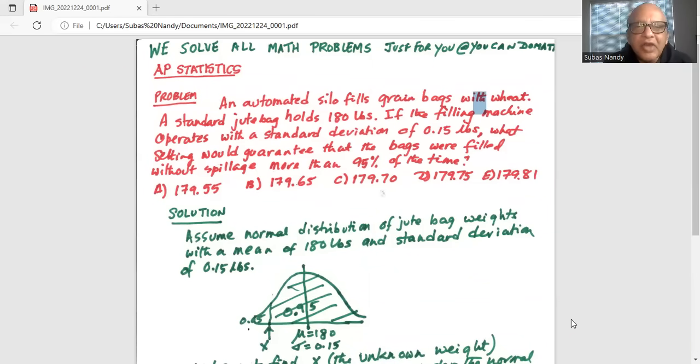An automated silo fills grain bags with wheat. A standard jute bag holds 180 pounds. If the filling machine operates with a standard deviation of 0.15 pounds, what setting would guarantee that the bags were filled without spillage more than 95% of the time?